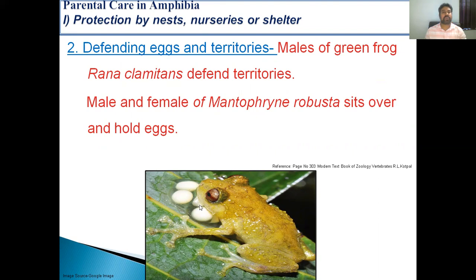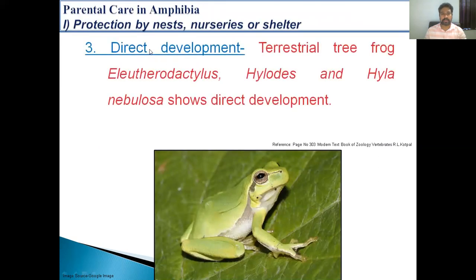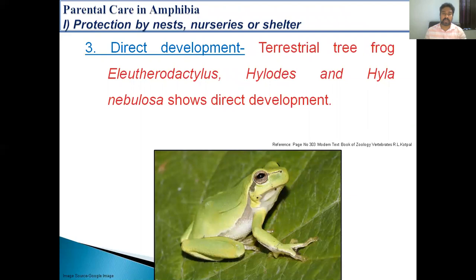The next way of parental care in amphibia is direct development. In this case, development is direct, meaning there is no formation of larva. In this way, larval mortality is prevented. The examples are terrestrial tree frogs: Eleutherodactylus, Hyalinobatrachium, and Hyalinobatrachium nubulosa, which show direct development.